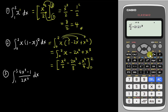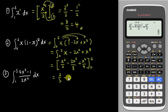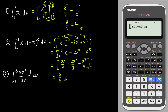The result simplifies to two over three minus zero, so the final answer is two over three. To verify, press the integration button, type x minus x squared as the integrand, press next to input limits from 0 to 2, and the calculator confirms the answer is two over three.